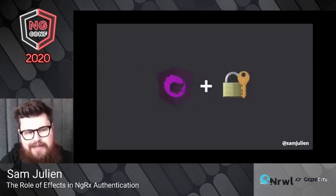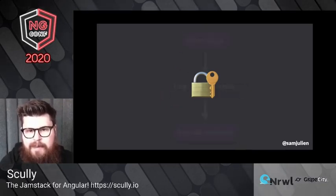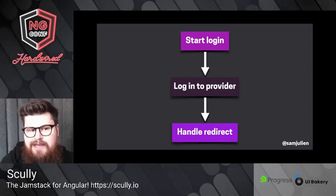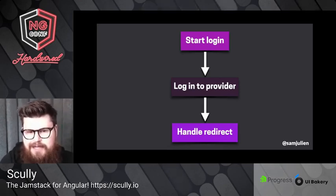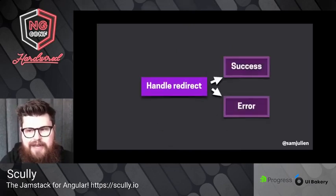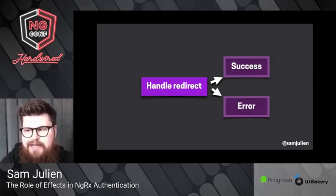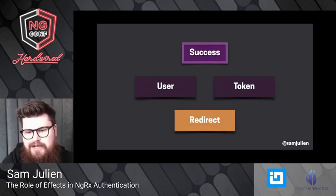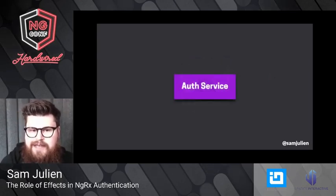Before we get to auth in NgRx, let's look at auth in general to understand the flow. We're covering the basic login process: you kick off the login by clicking a button, you get sent over to some identity provider where you log in, and then that provider sends you back to the application. The application then handles the redirect — usually there's some sort of auth SDK that goes out and exchanges a code for a token, bringing back a success or error message. Inside that success we'll usually have our user and token.